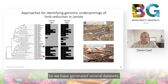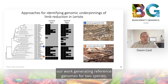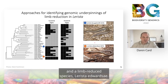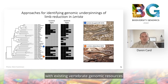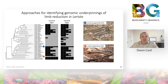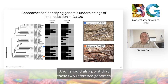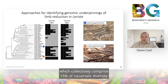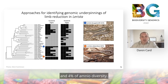We've generated several datasets, but today I'm going to focus on our work generating reference genomes for two species: a fully-limbed species, Larista bougainvillei, and a limb-reduced species, Larista edwardsae. This enables us to use comparative genomics with existing vertebrate genomic resources to investigate limb reduction. These two reference genomes are among the first genomic resources generated for skink lizards, which collectively comprise 15% of squamate diversity and 4% of amniote diversity.